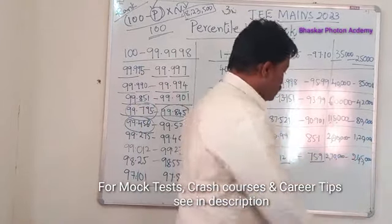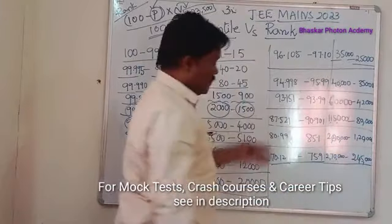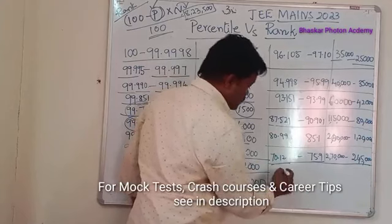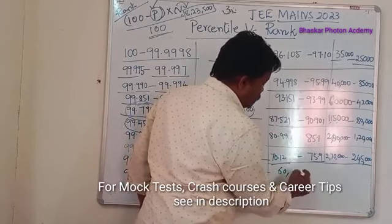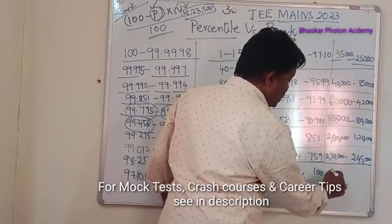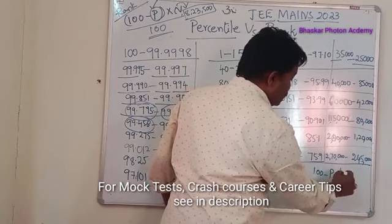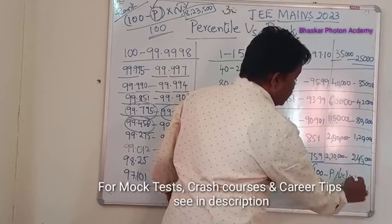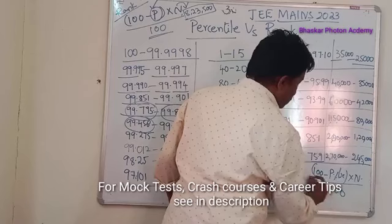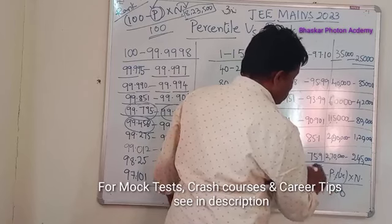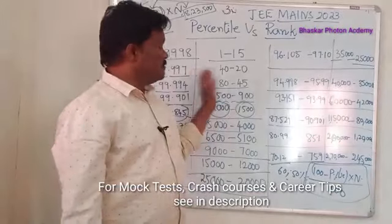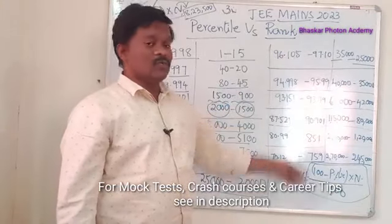For lower scores like 60 percentile or even 50 percentile, you can calculate your rank using the formula: rank = (100 minus percentile) into the number of candidates appeared, divided by 100. Based on this formula you will get your rank. Thank you students, thank you very much.